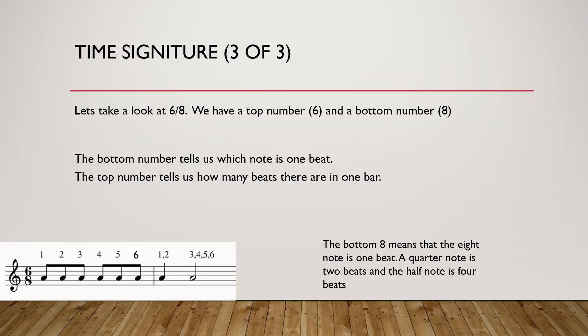We also have 6/8, which uses two completely different numbers. We have a top number 6 and bottom number 8. Again, the bottom number tells us which note is one beat, and the top number tells us how many beats there are in one bar. So the bottom 8 means that now the eighth note is one beat. So the quarter note will now be two beats, and the half note is four beats. One, two, three, four, five, six.